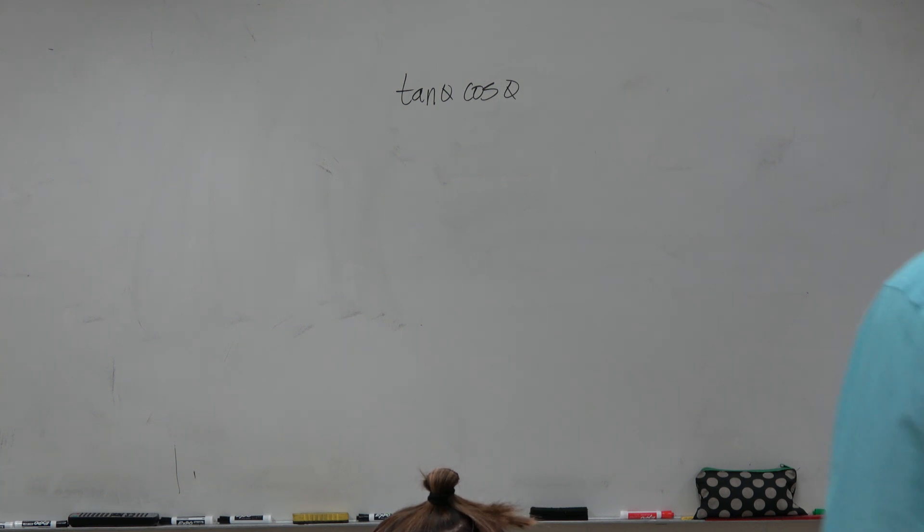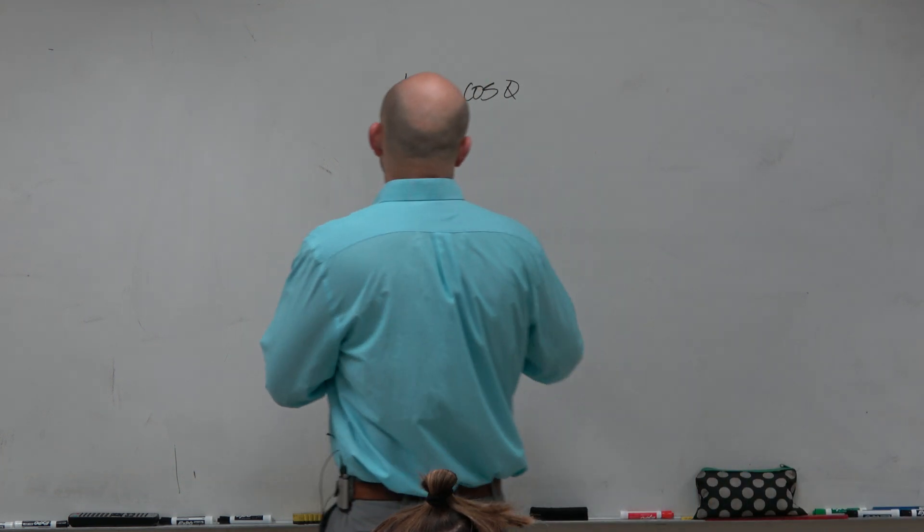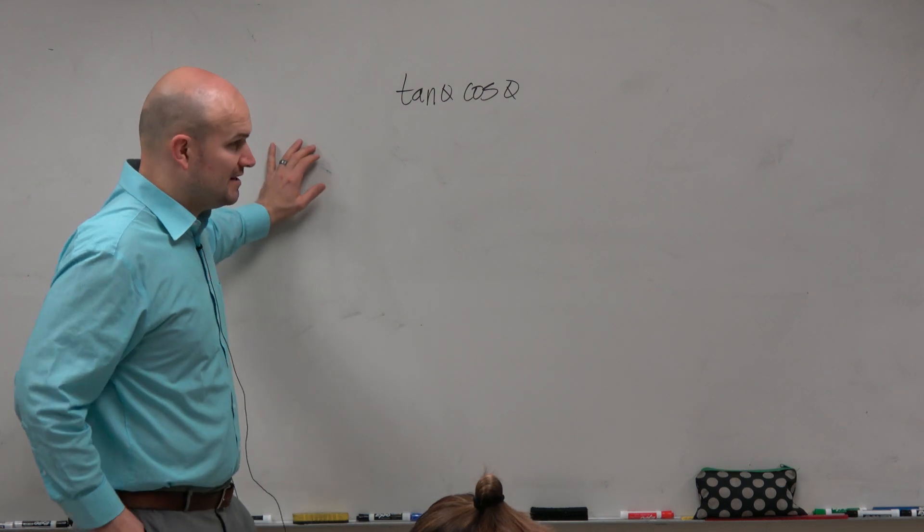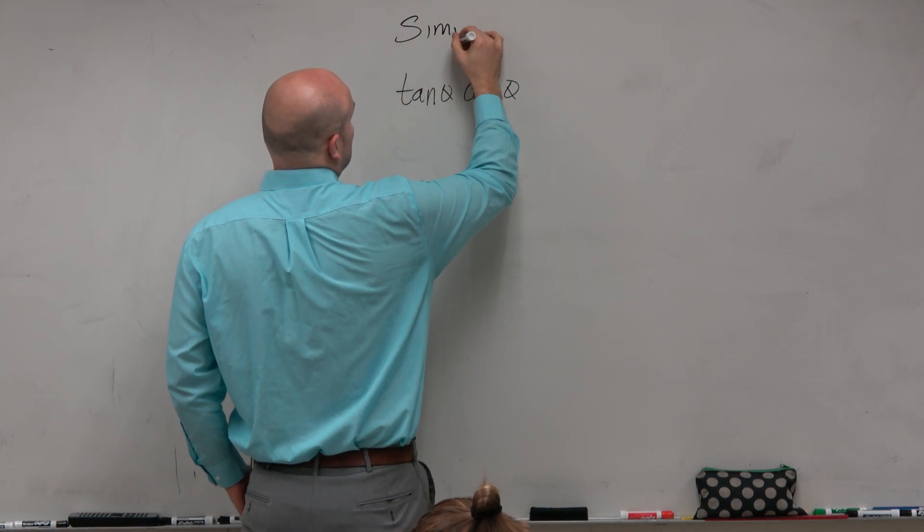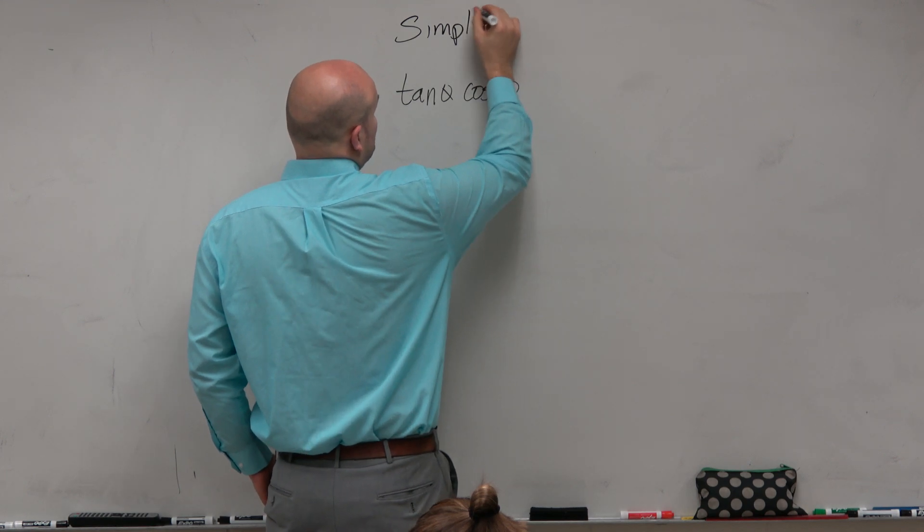How do you know what to do and when to do it? So here we have tangent of theta times cosine of theta. And our general idea, our general thing that I'm going to ask you guys to do is to simplify.